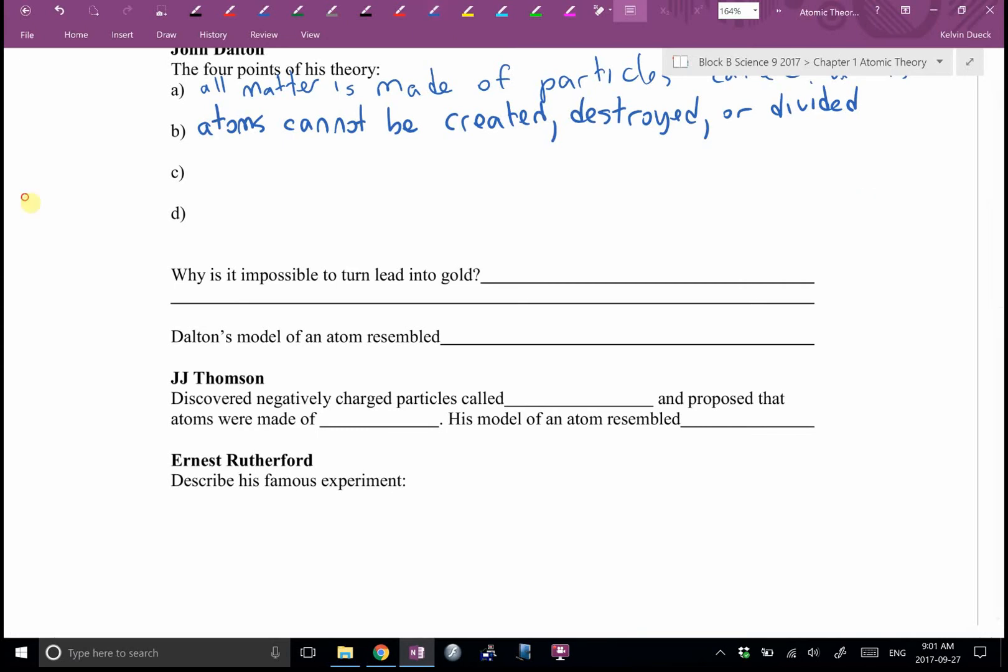All atoms of the same element are identical in mass and size, but are different in mass and size from atoms in the other. All atoms of the same element are identical. This is one of the key ideas. This was a revolutionary thought. People hadn't realized that. But it turns out any gold atom anywhere in the universe will look like any other gold atom anywhere in the universe.